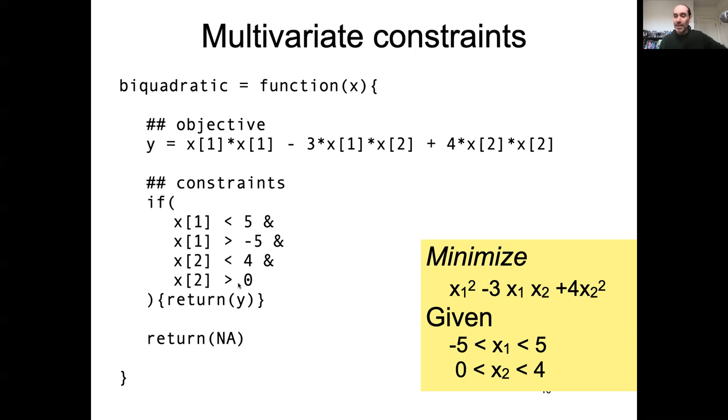Another quick reminder, I can't just say x has to be greater than minus 5 less than 5 like I do in this yellow box here. I have to actually split that into two different straight statements about the constraints because R doesn't know how to interpret that. And I'm combining these with the logical ands that we learned about way back in the first or second lab of the semester.